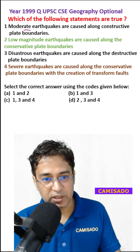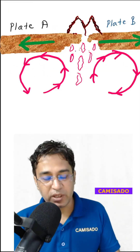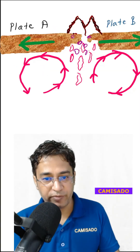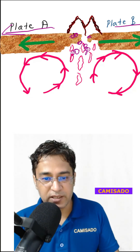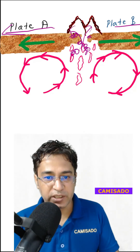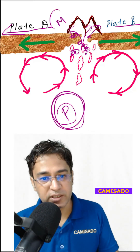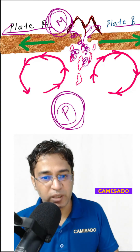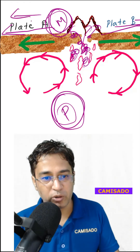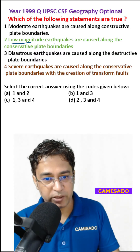Now let's examine the statements one by one. The first statement is: moderate earthquakes are caused along the constructive plate boundaries. This is correct. When the magma rises, solidifies, and makes new crustal material, since the two plates are moving away from one another, this rising magma is allowed to escape easily, so pressure does not build up. Therefore, the earthquakes caused here are just moderate earthquakes and they are also shallow focus earthquakes.